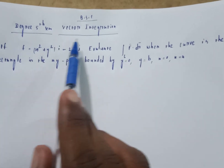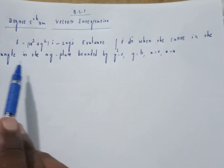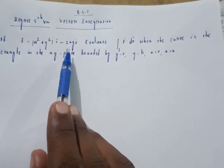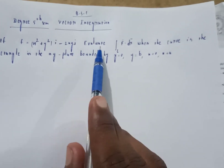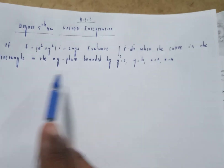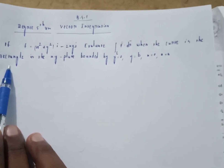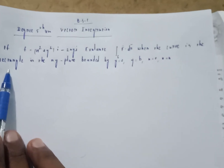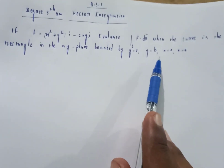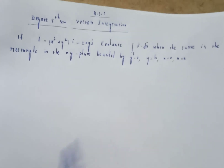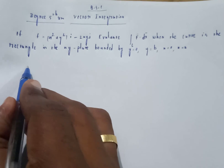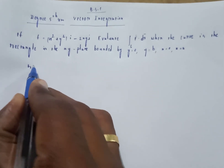Welcome to my channel Vector Integration Trainings. Most important sums. If F is equal to (x² + y²)i - 2xy·j, evaluate the integral ∮c F·dr when the curve is a rectangle in the xy-plane bounded by y=0, y=b, x=0, x=a.